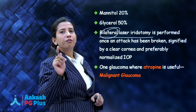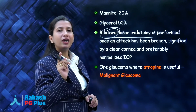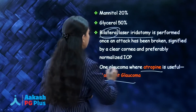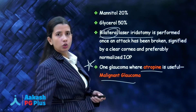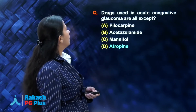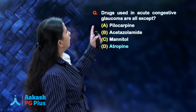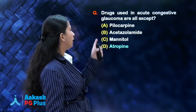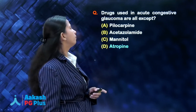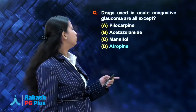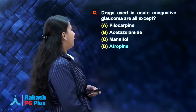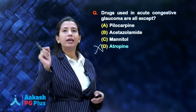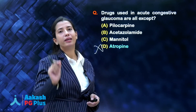The only glaucoma where a pupillary dilator or atropine is useful is malignant glaucoma — this is also a potential exam question, so remember it. Coming back to the question, drugs used in acute congestive glaucoma: pilocarpine — yes; acetazolamide — yes; mannitol — yes; atropine — no, we don't use it. Atropine is useful only in malignant glaucoma. So the answer is atropine.